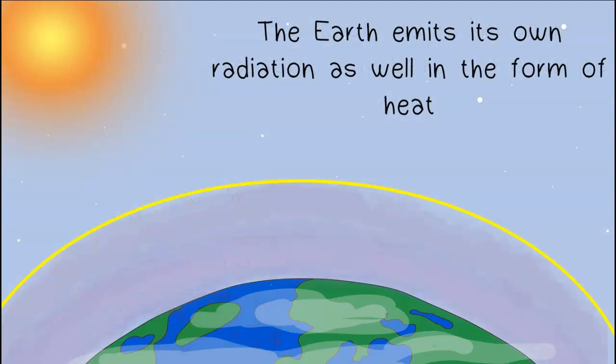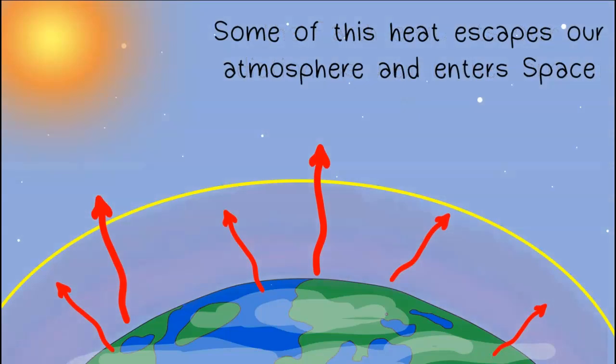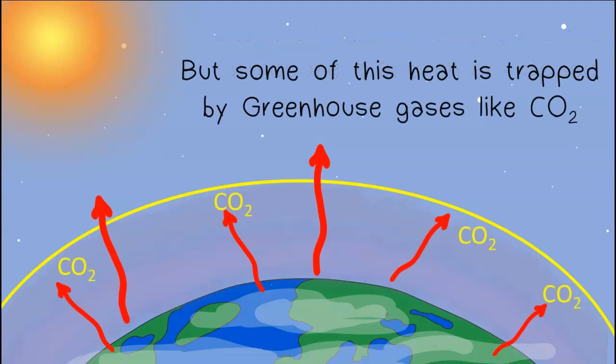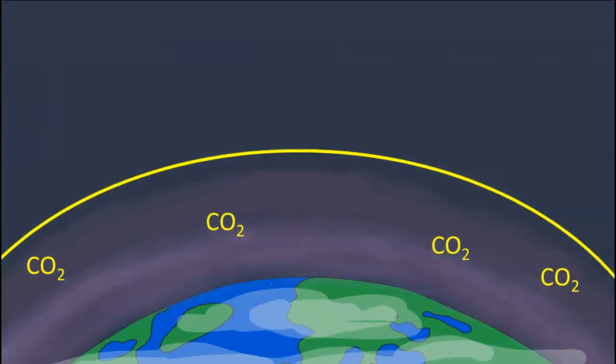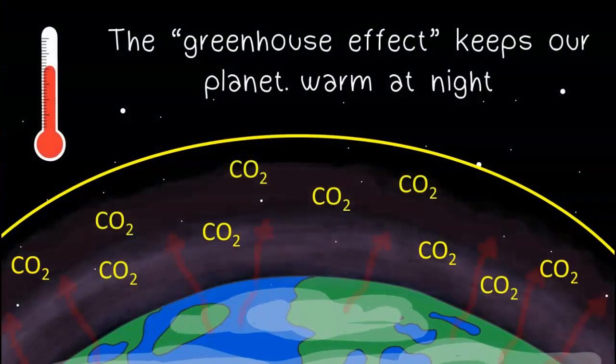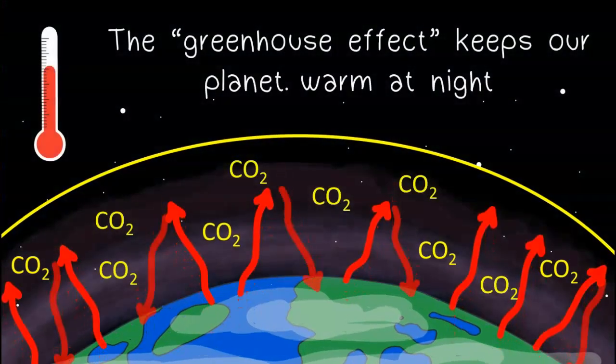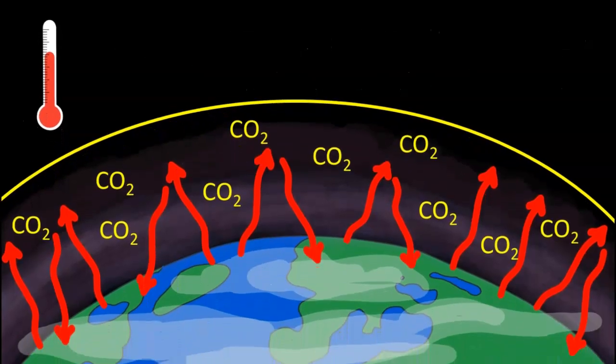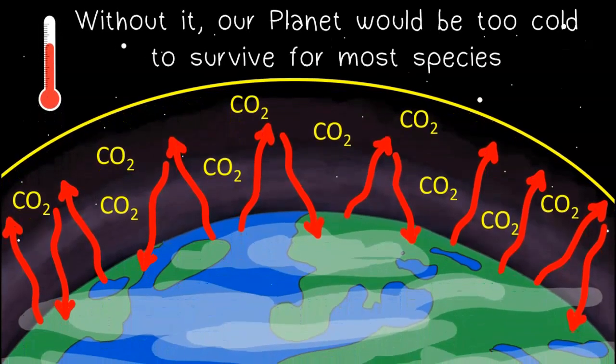The Earth emits its own radiation as well, in the form of heat. Some of this heat escapes our atmosphere and enters space. But some of this heat is trapped by greenhouse gases like carbon dioxide. The greenhouse effect keeps our planet warm at night. Without it, our planet would be too cold to survive for most species.